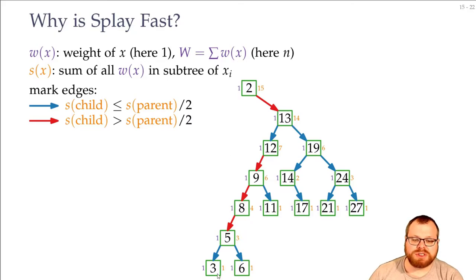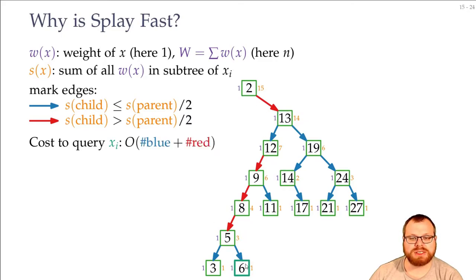Now let's say we want to query our key number 3. How much time does it take? Well, it's the length of the path. Or we can split it into red and blue edges. So the time to query number 3 or number 6 here is just the number of red plus number of blue edges on the path. Okay, so far so good.